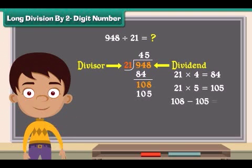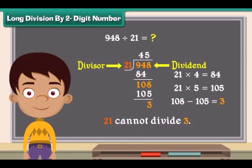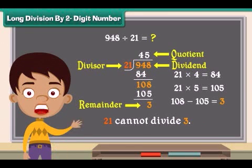Subtract 105 from 108. Answer is 3. 21 cannot divide 3. So 3 is the remainder and 45 is the quotient.